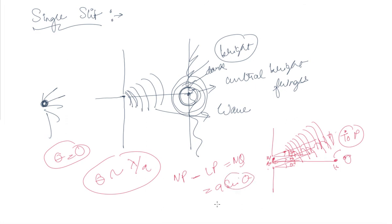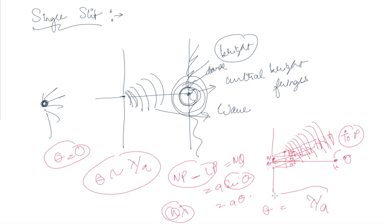For a very small angle, sin(theta) is approximately equal to theta. For the first bright fringe, the path difference is n·lambda. Therefore, setting n equal to 1, theta equals lambda upon a. This is the derivation from the single slit experiment, proving that light is indeed a wave.